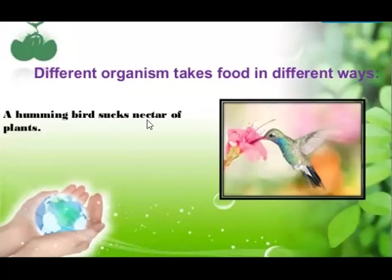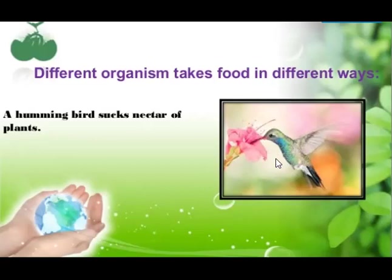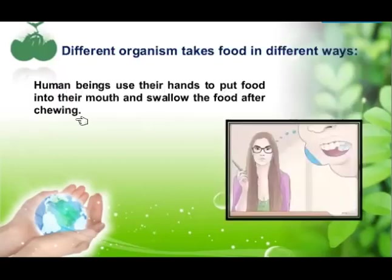For example, a hummingbird sucks nectar from flowers. The hummingbird is the smallest bird, and it sucks nectar from flowers. The same process is found in butterflies — they also suck nectar from flowers. Human beings use their hands to put food into their mouth and swallow food after chewing. We put solid food inside our mouth using our hands, chew it with our teeth, and then swallow it.